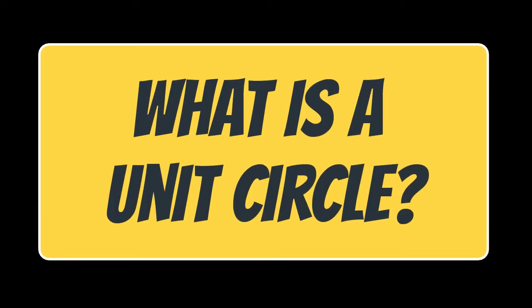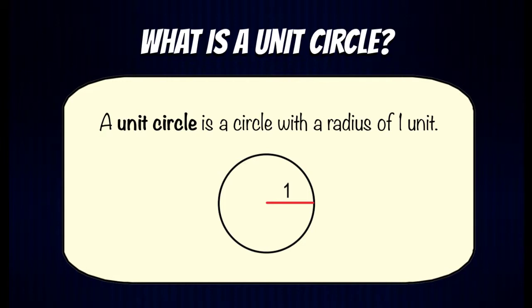So before we dive into unit circle angles let's answer the question what is a unit circle? It's really simple: a unit circle is a circle with a radius of one unit. It could be one inch, one centimeter, one mile, one anything. It doesn't matter, just one unit.